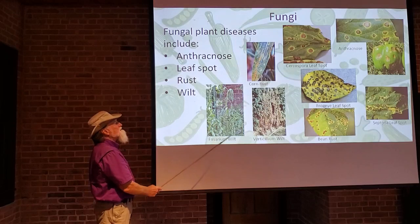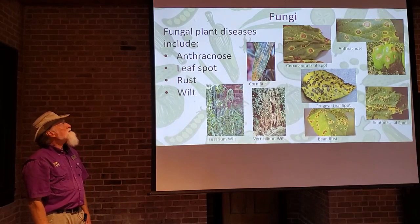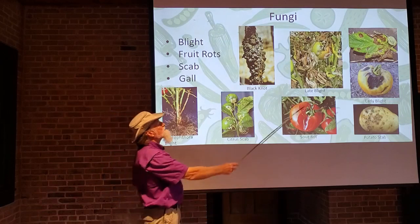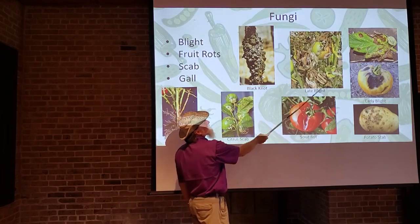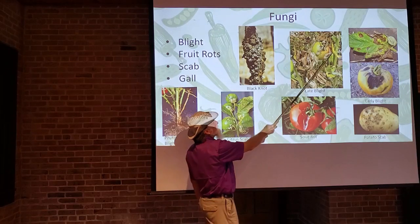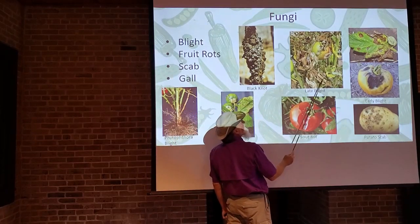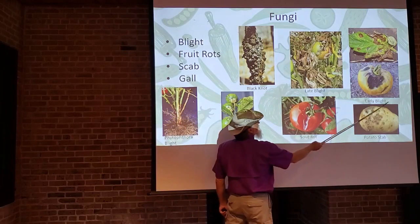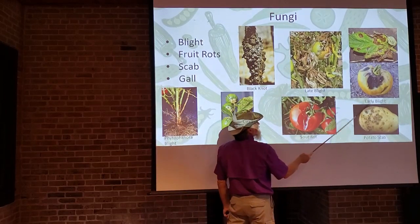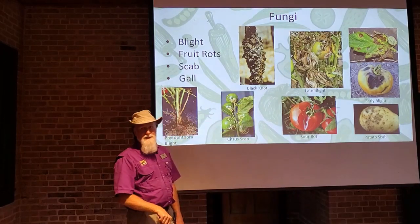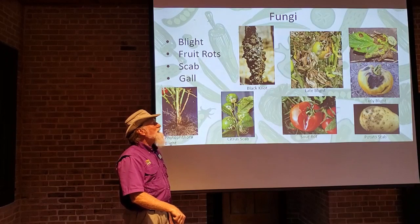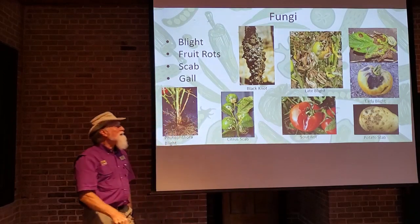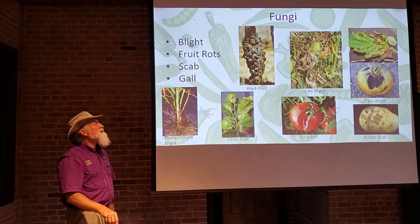Other fungal disease symptoms include blights — blight is when the plants just look scorched, being wiped out. This is late blight on tomato; this is early blight on tomato — you can see some differences. Early blight is usually earlier in the season when the conditions are ripe for that particular fungus; later in the year, as the season progresses, you get late blight because that's when the conditions favor that fungus. Both are very devastating diseases.